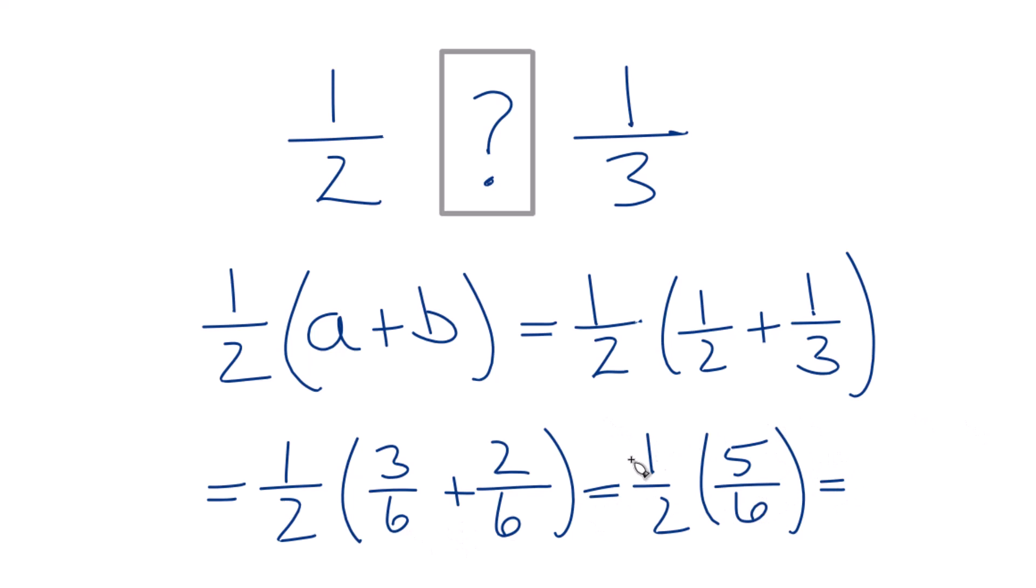When we multiply, we multiply the numerator and then the denominator. So 1 times 5 is 5. 2 times 6 is 12.